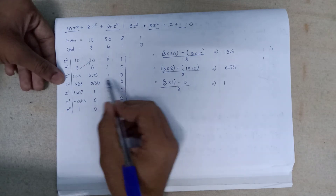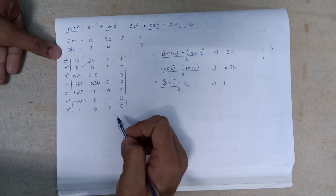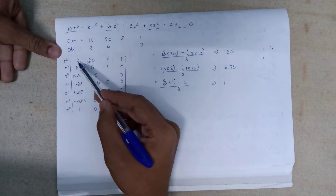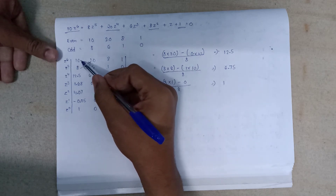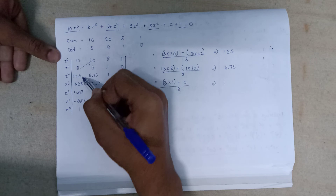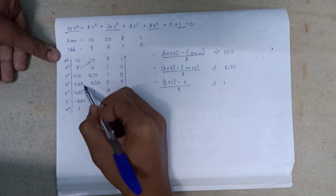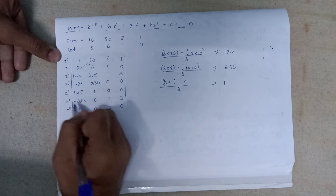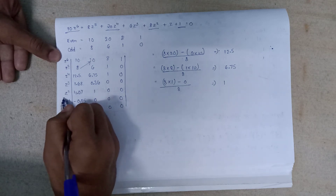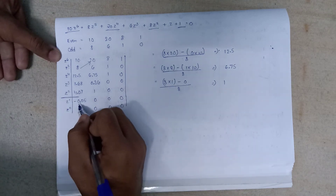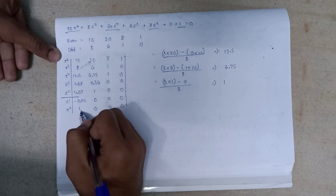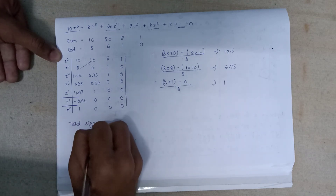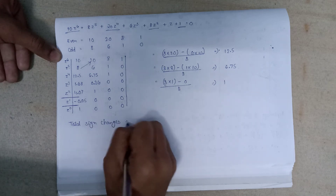After performing the multiplication and filling all entries, we check stability by looking for sign changes in the first column. 10 is positive, 8 is positive — no sign change. 8 to 12.5 — no sign change. 12.5 to 1.6 — no sign change. These are also positive. But 4.07 is positive and −0.05 is negative — that is 1 sign change. There is another sign change after that, so total number of sign changes equals 2.